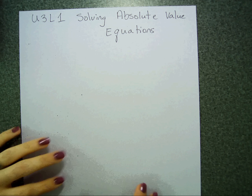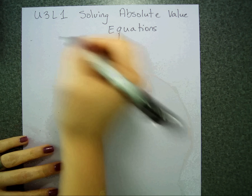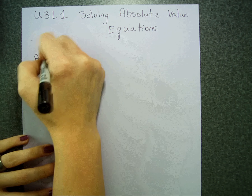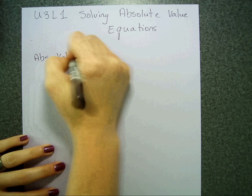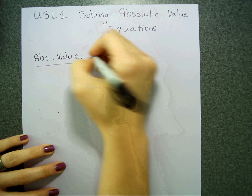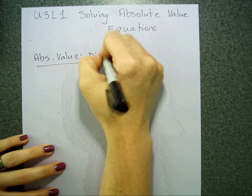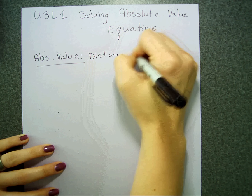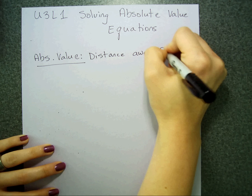In order to solve an absolute value equation, we need to understand what absolute value means. The absolute value is literally just the distance away from zero.